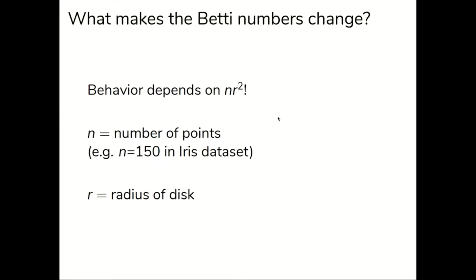To clarify, the Vietoris-Rips complex is defined here as including a simplex when the diameter of the points is less than or equal to 2r. So, the behavior of Betti one depends on whether or not nr² is relatively small, medium, or large.